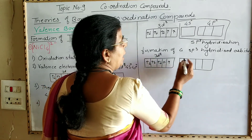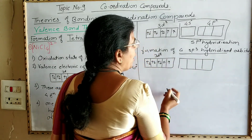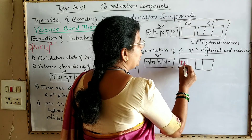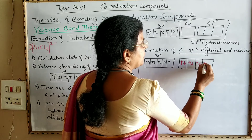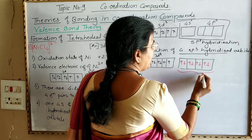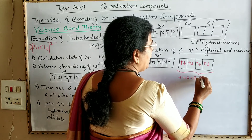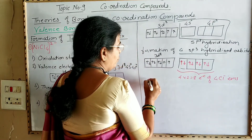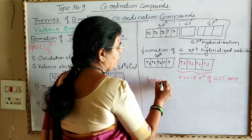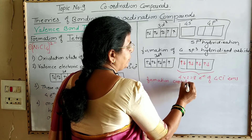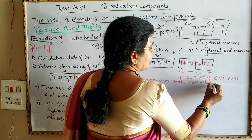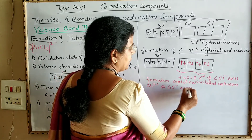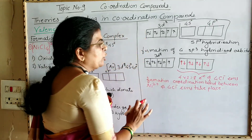Now it is 3d⁸ and these are the 4 sp³ hybridized orbitals. The metal ligands — that is, the 4 Cl⁻ ions — donate 4 pairs of electrons into these 4 sp³ hybridized orbitals of the Ni²⁺ ion. That is 4 × 2 = 8 electrons donated by 4 Cl⁻ ions to form coordination bonds, and the complex is formed.